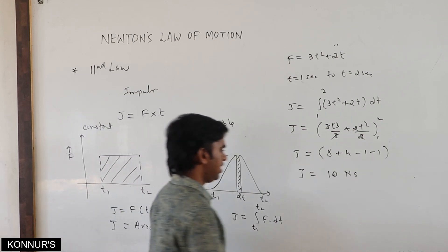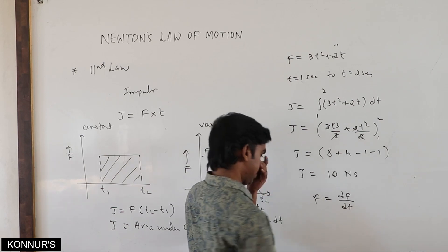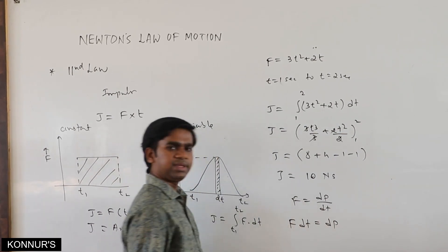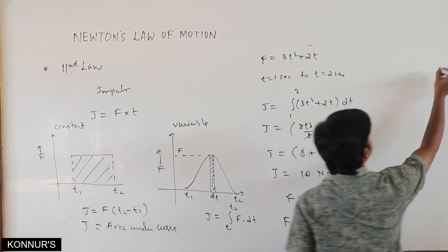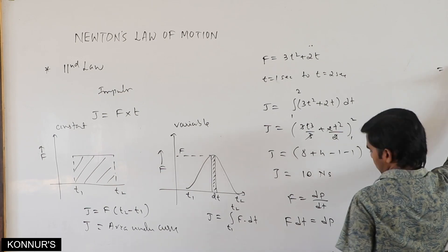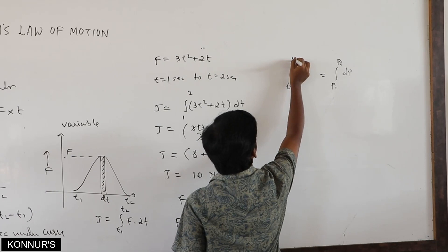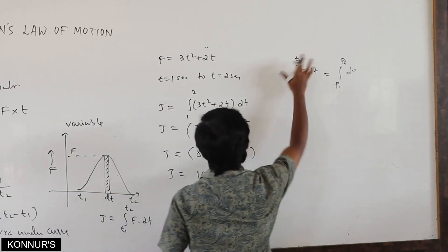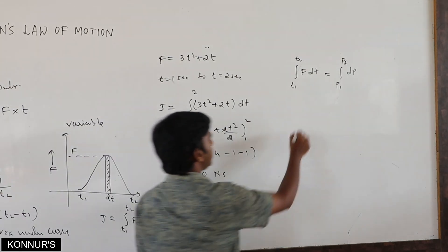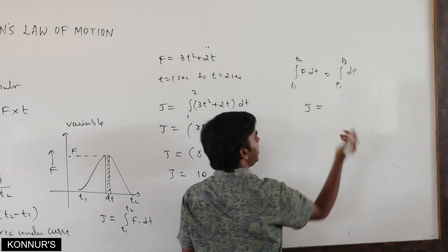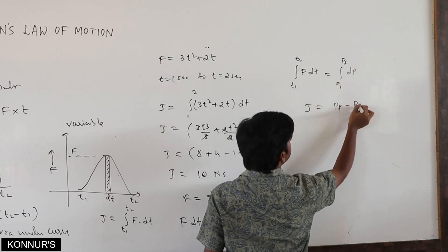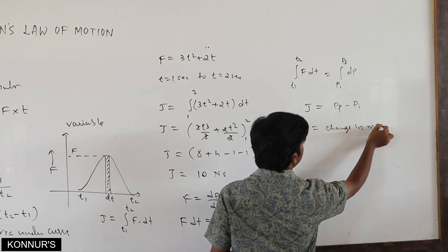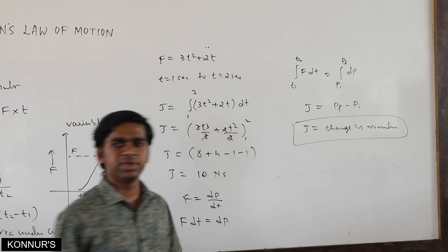We already know force equals rate of change of momentum dp/dt. Rearranging gives F·dt equals dp. Integrating both sides, the impulse equals the change in momentum — p_final minus p_initial. So J equals change in momentum. This is what we call the impulse-momentum theorem.